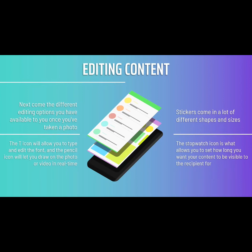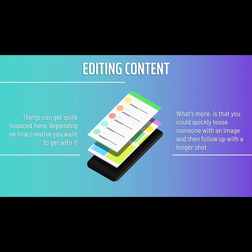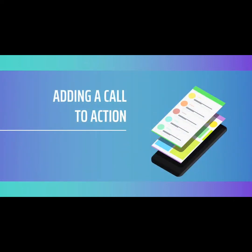The timing feature lets you show a quick glimpse of something or a longer image that gives the user time to read. Things can get quite nuanced here depending on how creative you want to get. If you are so inclined, you can change the timings of different shots as your viewers swipe through your feed in order to create a more surprising and dynamic experience. You could quickly tease someone with an image and then follow up with a longer shot — it even allows for a sense of comic timing.